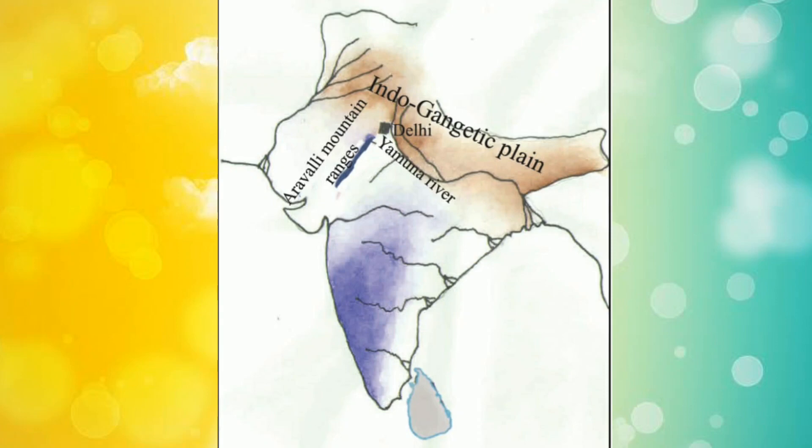The Aravali mountain ranges have two uses for Delhi people. First, the Aravali was like a wall or barrier for Delhi — when enemies attacked or war happened, the Aravali mountain ranges protected them. Second, the Aravali mountain ranges had a lot of stones, so the people of that time used the rocks and stones from there to build their homes and buildings. And then the Indo-Gangetic Plain — it has a lot of fertile soil and no problem with water.